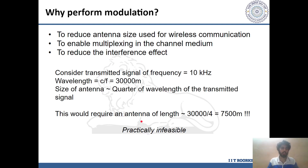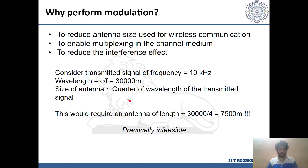Now let's discuss why we need to perform modulation. In wireless transmission, antennas are used at the transmitting and receiving sides and their length is proportional to the wavelength of the signal. For example, if the transmitted signal has a frequency of 10 kHz, its wavelength is c divided by frequency, that is 3×10⁸ divided by 10⁴, giving 30,000 meters, making the antenna length approximately one-fourth of that, about 750 meters, which is often impractical. Transmitting the same signal at 10 MHz would be far more useful, hence the first use of modulation is to reduce antenna size.